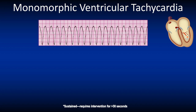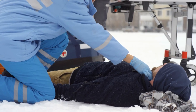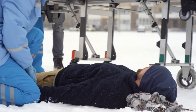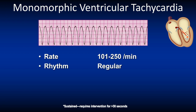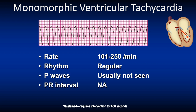This slide illustrates monomorphic ventricular tachycardia. VT can be sustained and usually degenerates into VF, or non-sustained. Treatment is initiated based on the clinical presentation. If you see this rhythm, check for a pulse, as this can be a pulseless ventricular tachycardia which requires high-quality CPR and defibrillation, or a VT with a pulse that could either be stable or unstable. The rate is 100 to about 250, the rhythm is regular, P waves are usually not seen, the PR interval is not applicable, and the QRS complex is wide.